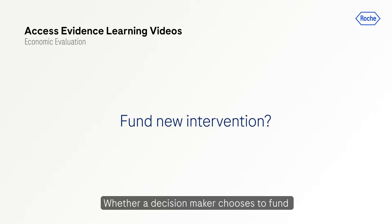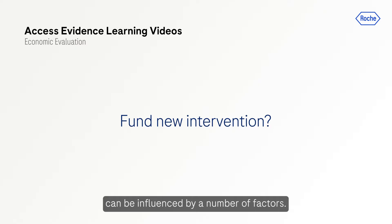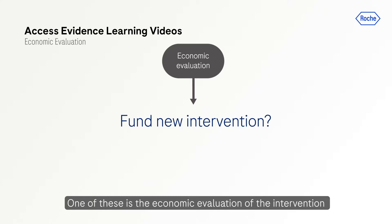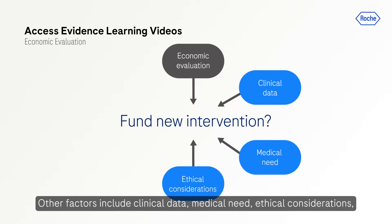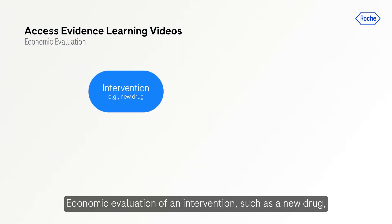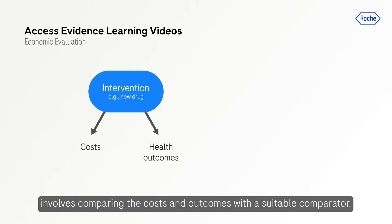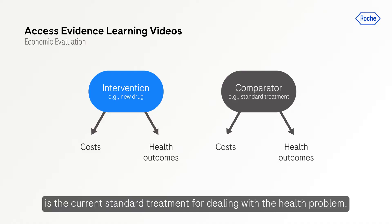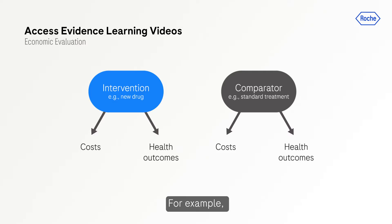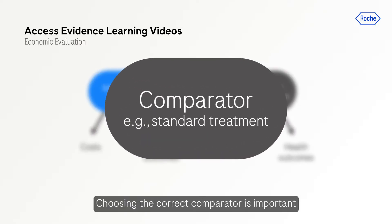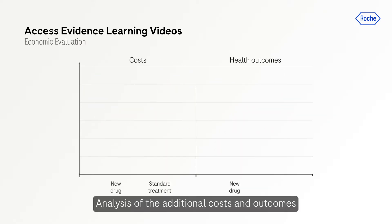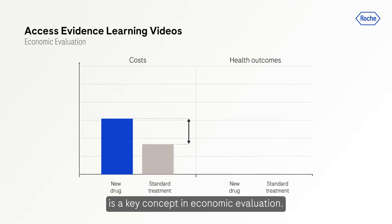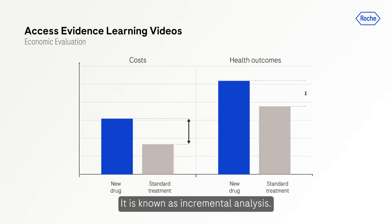Whether a decision maker chooses to fund a new health care intervention or not can be influenced by a number of factors. One of these is economic evaluation of the intervention in terms of costs and health outcomes. Others include clinical data, medical need, ethical considerations, political pressures, and budget impact. Economic evaluation of an intervention, such as a new drug, involves comparing the costs and outcomes with a suitable comparator. The correct choice of comparator is the current standard treatment — for example, the most commonly prescribed drug in the treatment area. Choosing the correct comparator is important to ensure that the economic evaluation results are not misleading. Analysis of the additional costs and outcomes of an intervention over standard treatment is a key concept in economic evaluation, known as incremental analysis.